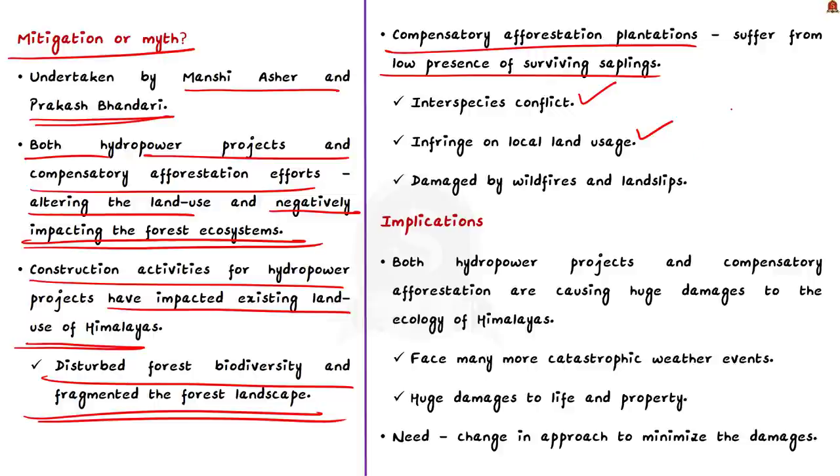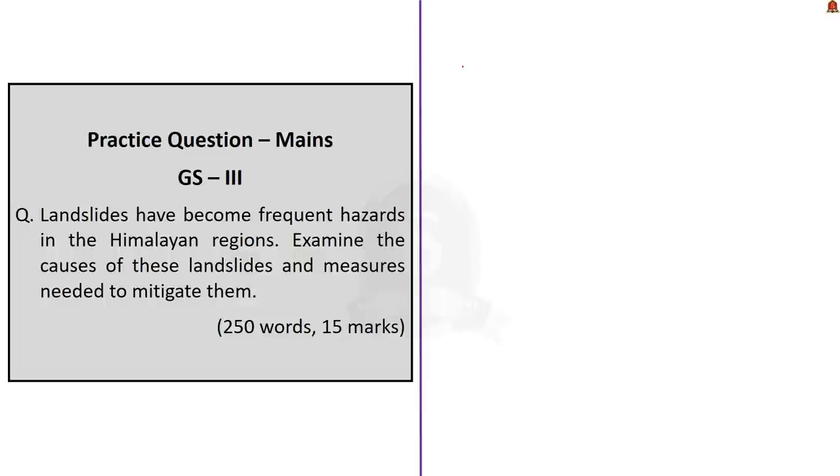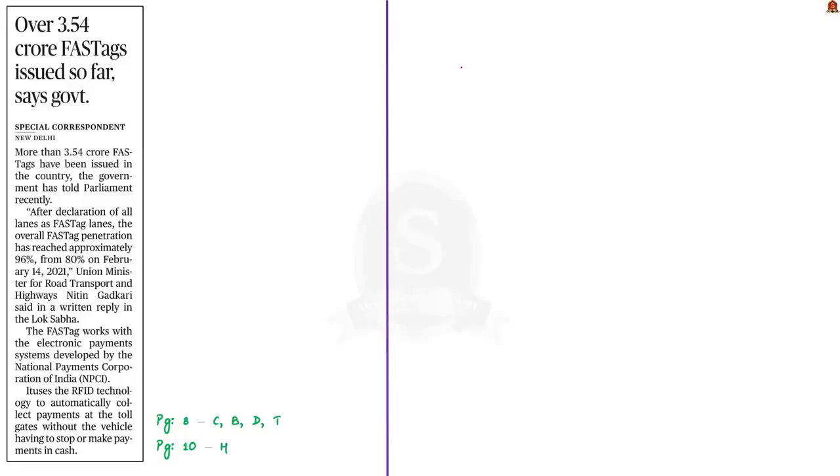We can see that both hydropower projects and compensatory reforestation are causing huge damages to ecology of Himalayas. If government continues on the same path we will face many more catastrophic weather events in the region causing further damages to property and life. Hence the need of the hour is a change in our approach towards handling the ecology and to minimize the damages in the future.